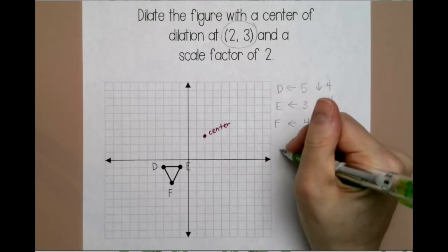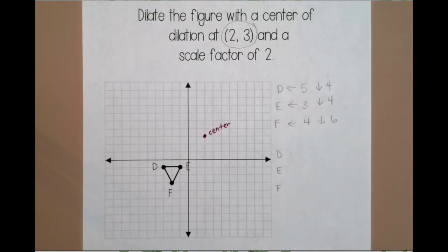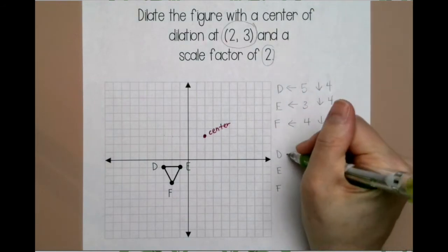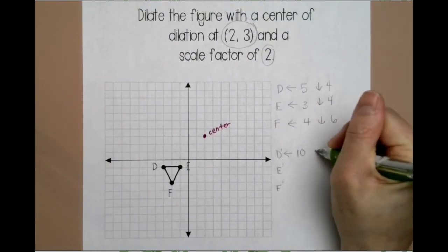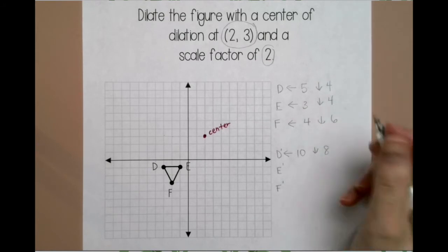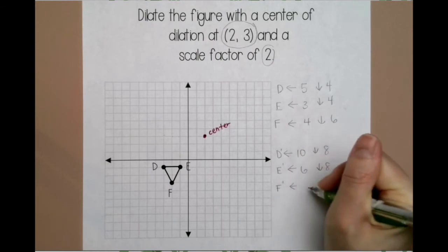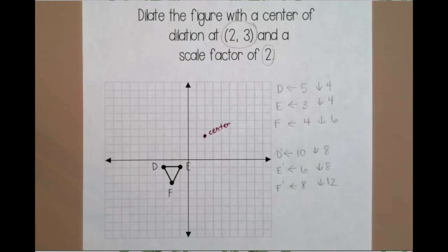To get your new points, your image points, you're going to multiply each of the counts by the scale factor, which is 2. So for D prime, I'm going to go left 10, and down 8. For E prime, left 6, down 8. For F prime, left 8, down 12.